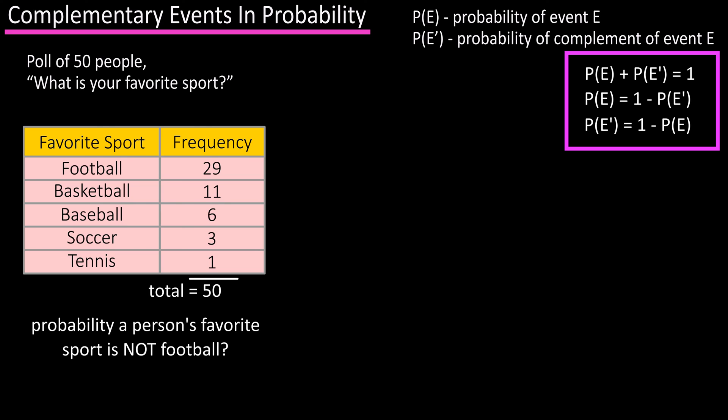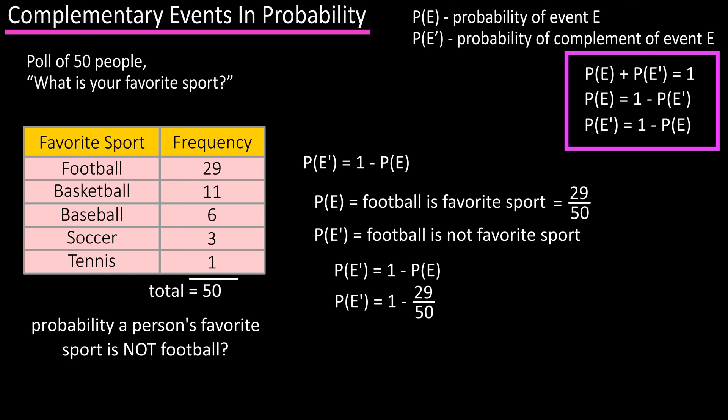To answer this, we can use the equation probability of E prime equals 1 minus the probability of E. In this equation, the event E is the probability that football is a person's favorite sport, which is 29 over 50, and E prime is the probability football is not a person's favorite sport. So, the probability of E prime equals 1 minus 29 over 50.